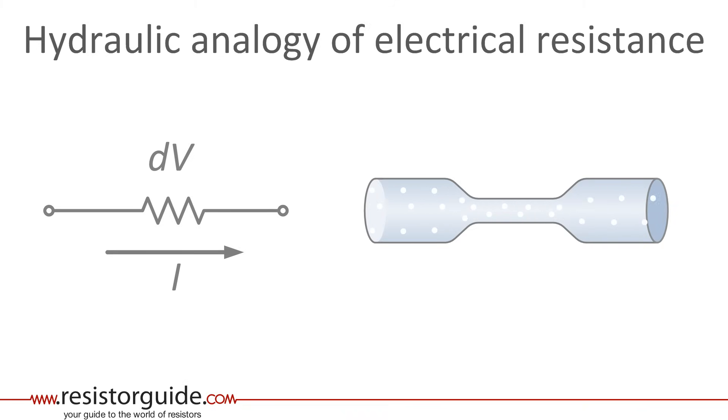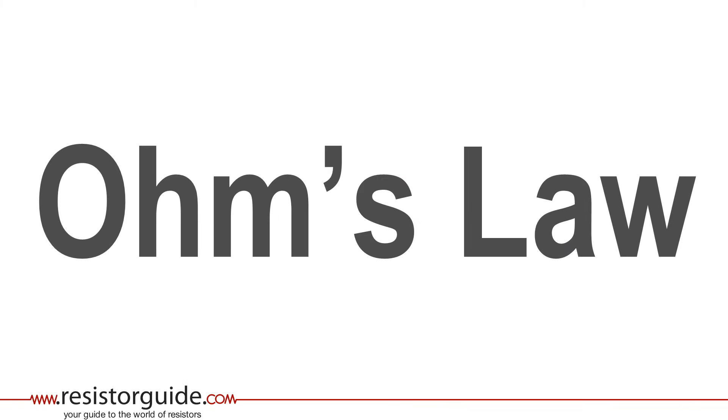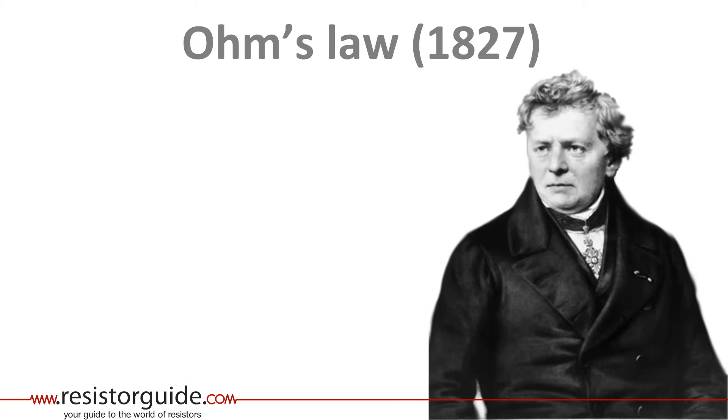The relation between the electrical current, voltage and resistance is described by Ohm's law. Mr. Ohm was a German scientist that discovered in 1827 that electrical resistance is equal to voltage divided over current. In this formula, resistance is in ohms, voltage in volts and current in amps.